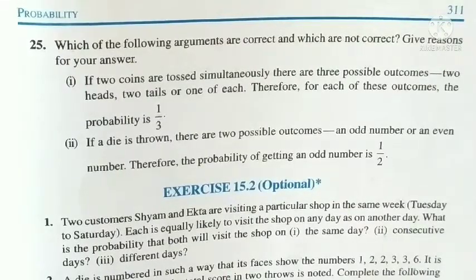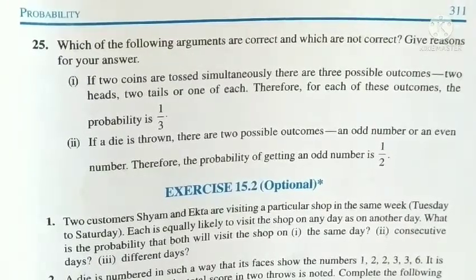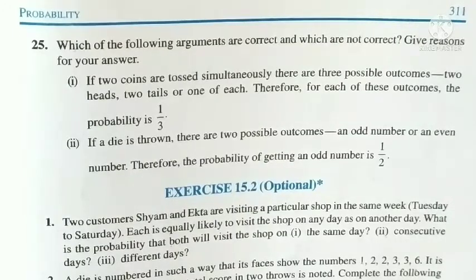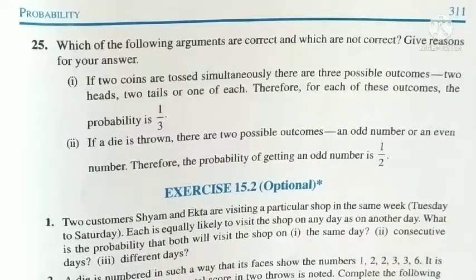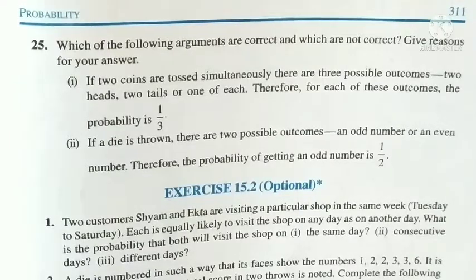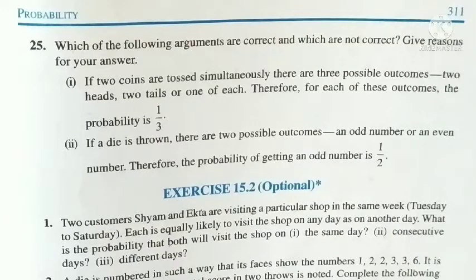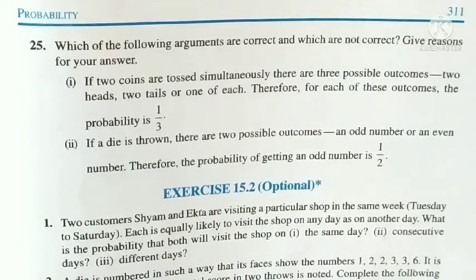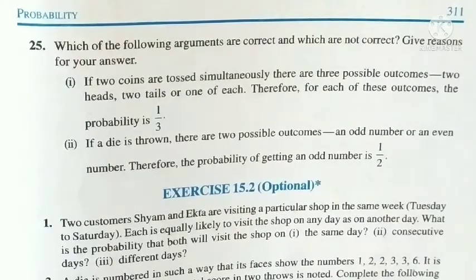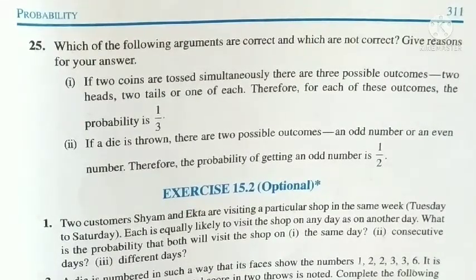For the second argument: on a die, numbers 1 to 6 are either even or odd. Odd numbers are 1, 3, 5 — three favorable outcomes out of 6 — so P(odd) = 3/6 = 1/2. Similarly for even numbers: 2, 4, 6 — three favorable outcomes — P(even) = 3/6 = 1/2. So the second argument is correct.